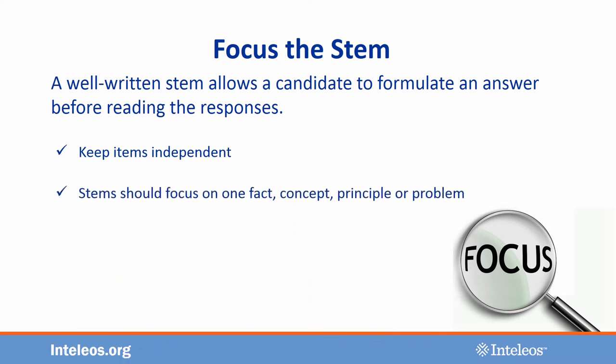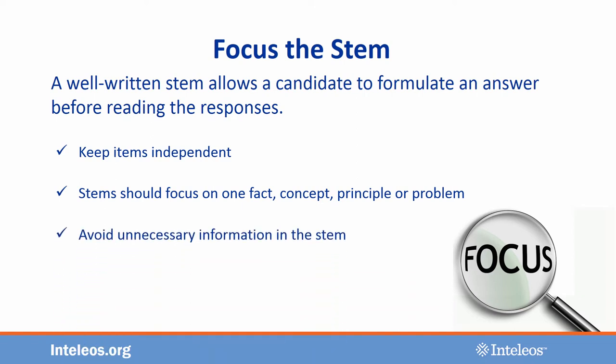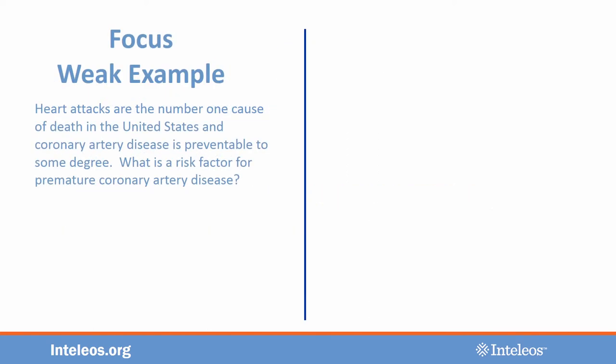You should also try to keep your stems concise. Stems should focus on one fact or concept without a lot of irrelevant information to sort through. Let's look at some examples. Heart attacks are the number one cause of death in the U.S., and coronary artery disease is preventable to some degree. What is a risk factor for premature coronary artery disease?